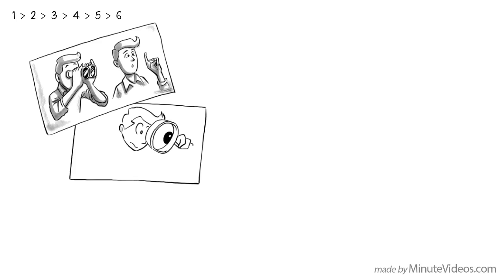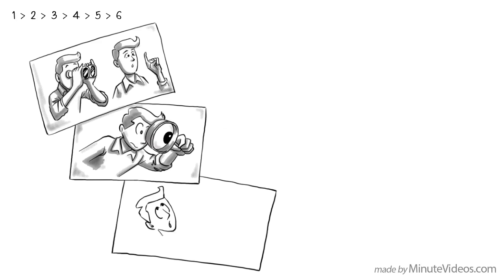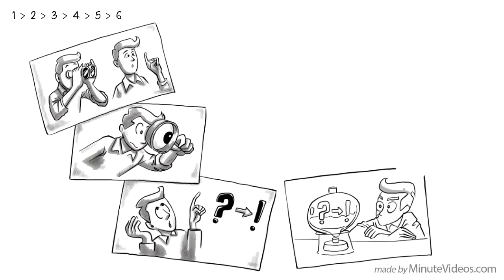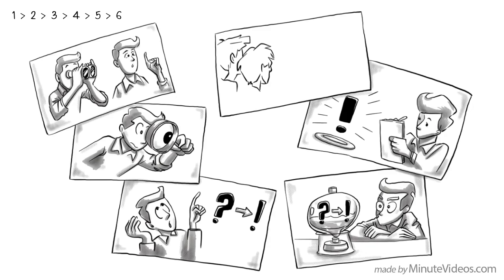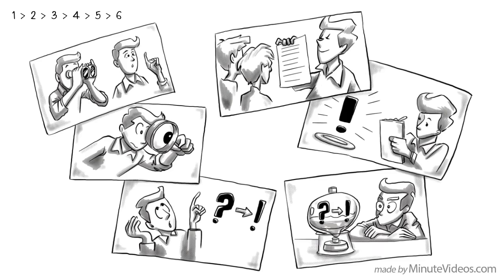There are six steps to it. 1. Observe and ask questions. 2. Research. 3. Formulate a hypothesis. 4. Test your hypothesis. 5. Conclude. 6. Share results. The goal of the scientific method is to find out the truth. Let's try.